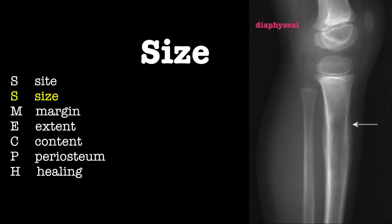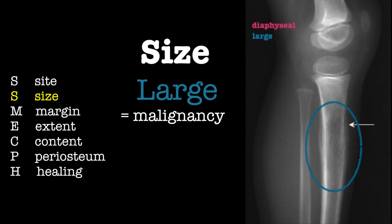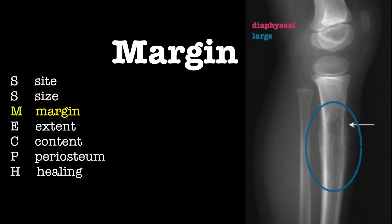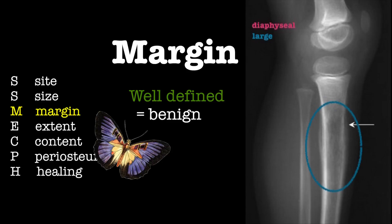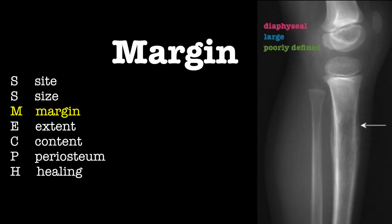The second S is for size. Large lesions are usually indicative of malignancy. The current lesion is relatively large. M is for margins. A well-defined lesion with sclerotic edges suggests that there is a host response occurring, therefore the lesion is likely benign. A lesion with a moth-eating appearance implies malignancy. The boundary of this lesion is well-defined, suggesting a more aggressive process.